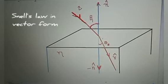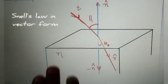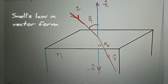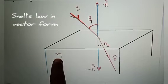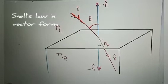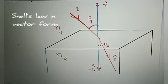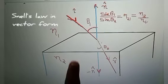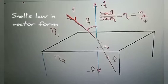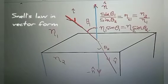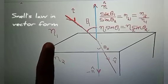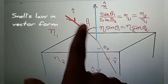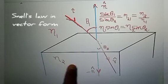Before I start today's question, here we have this diagram showing refraction. There's a transparent medium of refractive index eta1 and another medium of refractive index eta2. We know Snell's law: sine theta1 upon sine theta2 is equal to eta2 upon eta1. We can also write it as eta1 sine theta1 is equal to eta2 sine theta2.